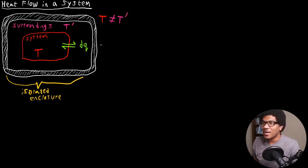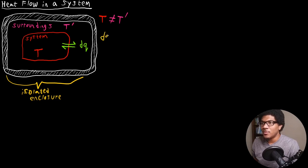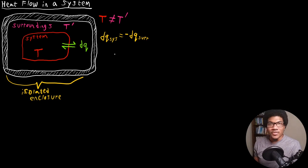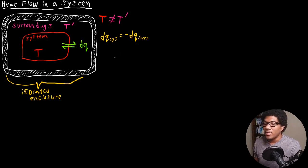Since this system is isolated, the heat transfer must equal zero in accordance with the first law of thermodynamics. So we know the following statement is true: DQ of the system is going to be equal to negative DQ of the surroundings. Whatever is transferred from the system is received by the surroundings and vice versa. From this, we can write out a total equation for the entropy of the universe.